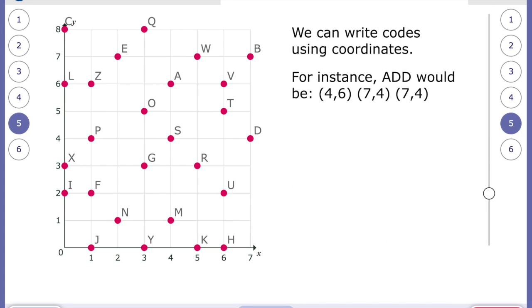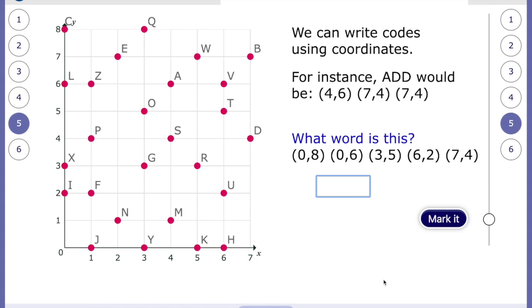And we can write codes using coordinates. For instance, add would be four, six, seven, four, seven, four. Four, six for A. And then D. There's two Ds. So it's seven, four twice. Where is D? Well, there's seven and there's four. There it is. Seven, four.